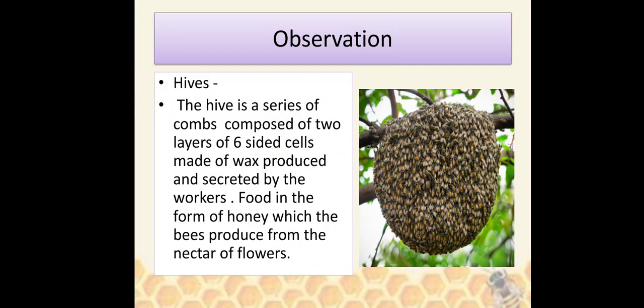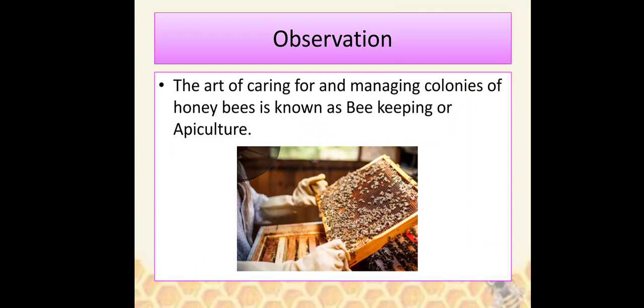The hive is a series of combs composed of two layers of six-sided cells made of wax produced and secreted by the workers. Food in the form of honey, which the bees produce from the nectar of flowers, is stored in the hive. The art of caring for and managing colonies of honeybees is known as beekeeping or apiculture.